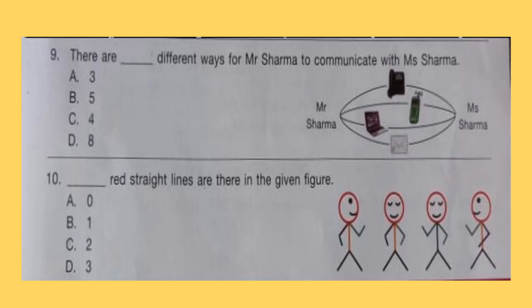Question 9: There are dash different ways for Mr. Sharma to communicate with Ms. Sharma. Question 10: Dash red straight lines are there in the given figure.